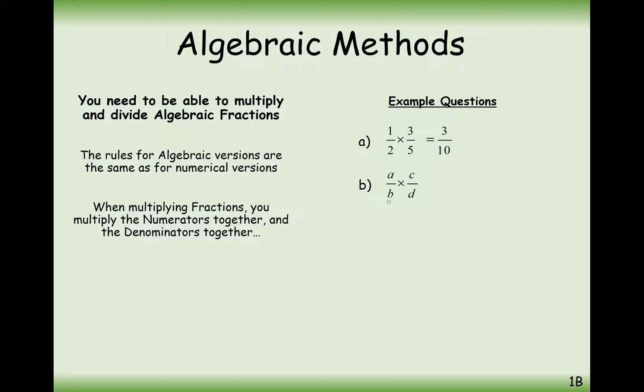In general, if we've got A over B times C over D, it's top times top, bottom times bottom. So it's AC over BD.